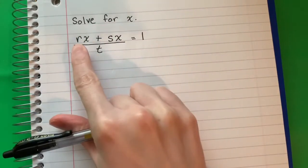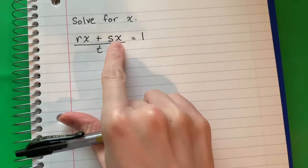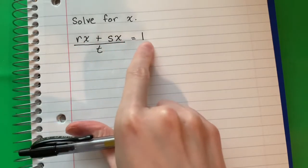Solve for x in the equation rx plus sx all divided by t equals 1.